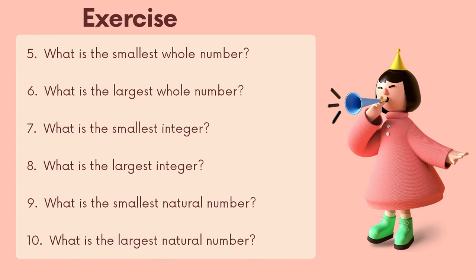What is the smallest whole number? Zero. What is the largest whole number? Unknown — it goes to infinity.